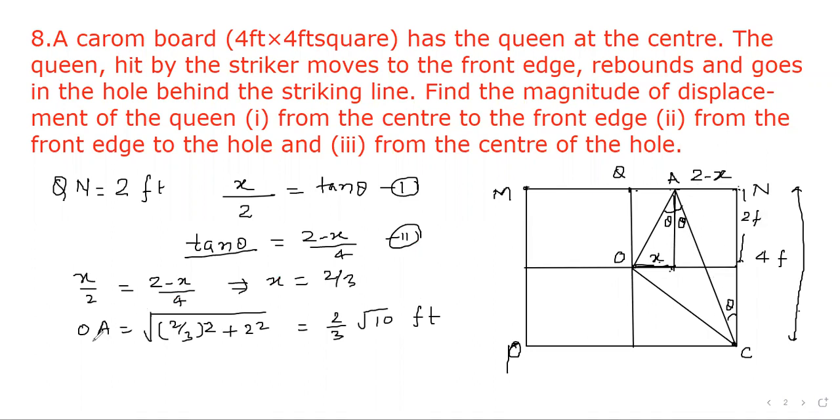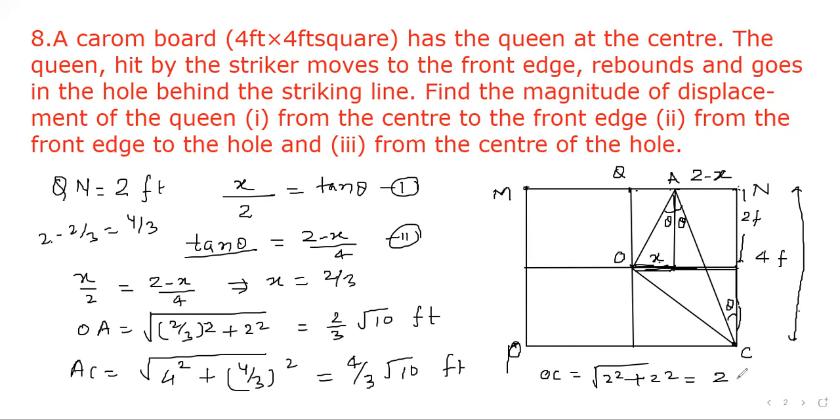Now we have to find out AC. So AC equal to root of 2 minus x square plus NC square. NC is 4. 4 square plus 2 minus x. 2 minus 2 by 3 will be 6 minus 2 by 3. So here 4 by 3 square. So this will come out to be 4 by 3 root 10 feet. Now we have to find out OC. So this is 2 and this portion is 2 and this portion is 2 and this portion is also 2. So root of 2 square plus 2 square, that is 2 root 2 feet.